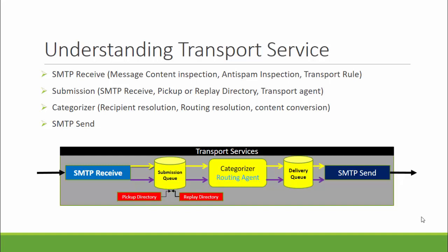The categorizer picks up one message at a time from the submission queue, then performs recipient resolution — including top-level addressing and distribution group expansion — followed by routing resolution and conversion. After messages are categorized, they are placed in a delivery queue based on the destination. SMTP send depends on the location of the message recipient relative to the mailbox server where categorization occurred. The message could be routed to the mailbox transport delivery service on the same or a different mailbox server. If delivery is routed through the internet, a send connector on the same mailbox server may participate, or the transport service on a different mailbox server may participate.